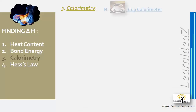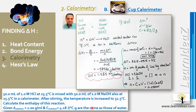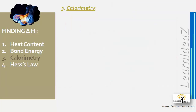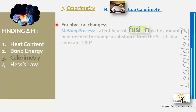You can pause and take notes. The coffee cup calorimeter can also be used to find delta h for physical changes, such as the melting process.